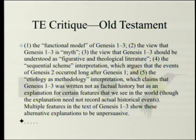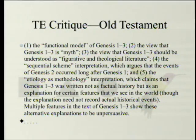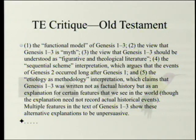Those five models are: one, the functional model of Genesis 1-3; two, the view that Genesis 1-3 is myth — those are the two we'll cover today; three, the view that Genesis 1-3 should be understood as figurative in theological literature; four, the sequential scheme interpretation, which argues that the events of Genesis 2 occurred long after Genesis 1; and five, the ideologies methodology interpretation, which claims Genesis 1-3 was written not as factual history but as an explanation for certain features we see in the world, though the explanation need not record actual historical events.